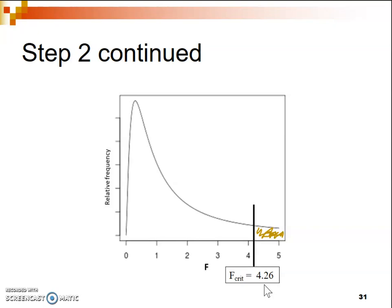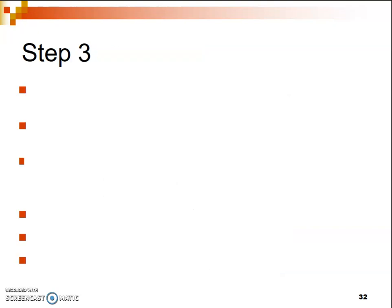Now that we have our critical region established in step 2, we can calculate the statistic of interest in step 3. In previous chapters, we used the t-test to test our hypotheses, but now we're using the F-statistic. In step 3, we write out our formulas first. Our ultimate goal is to calculate the value for our F-ratio. The formula is MS between divided by MS within. MS is just a fancy way of referring to variance — it's the variance between groups over the variance within groups.